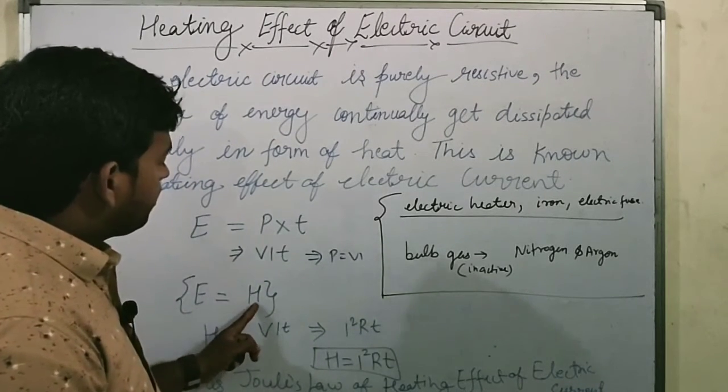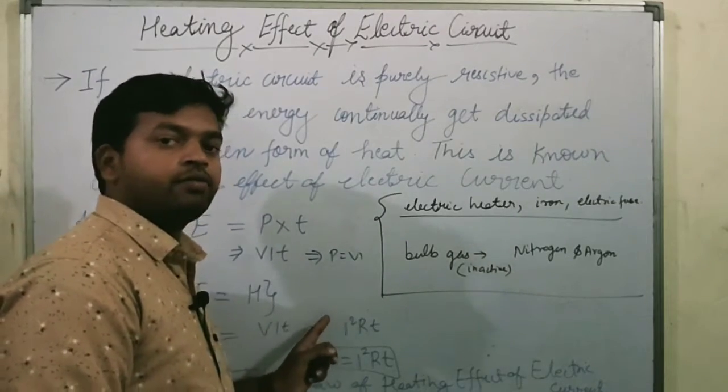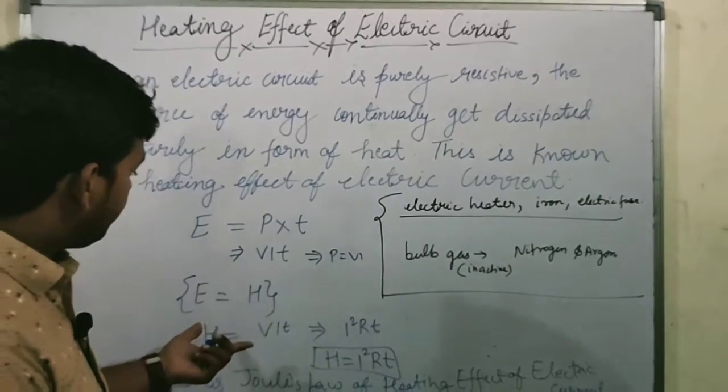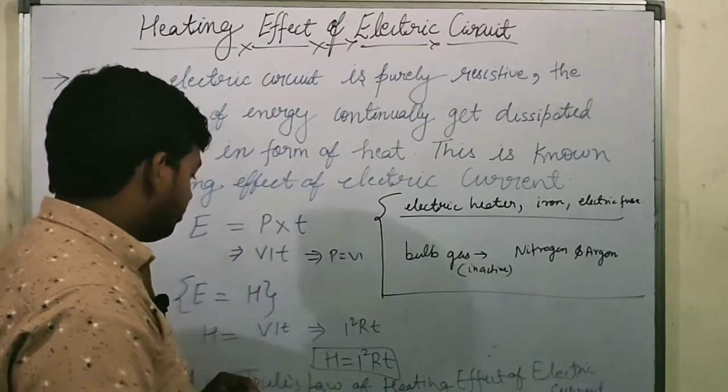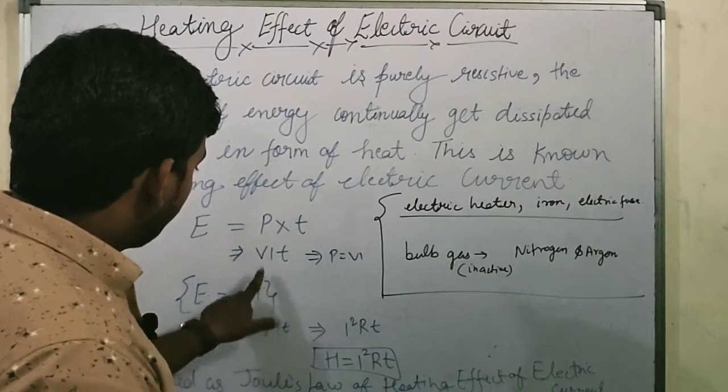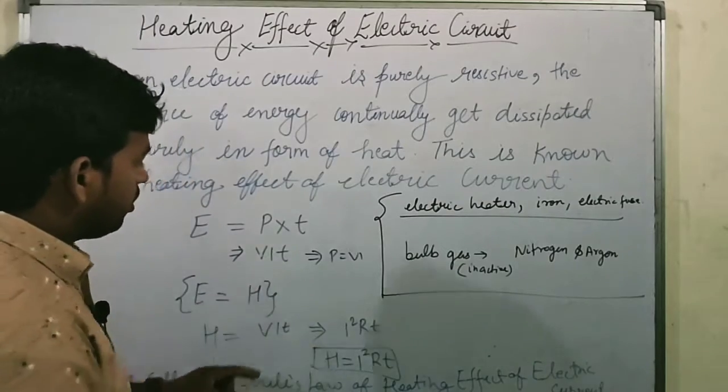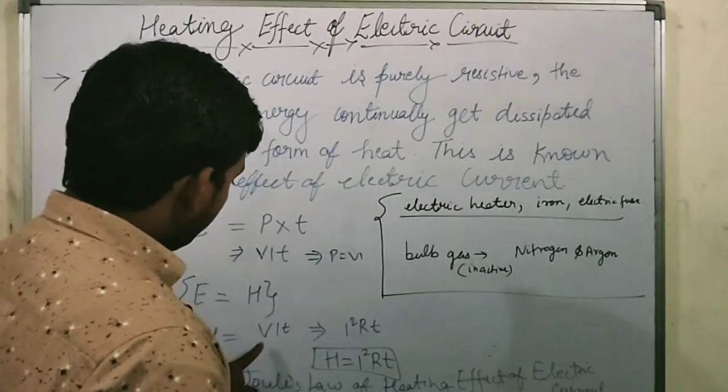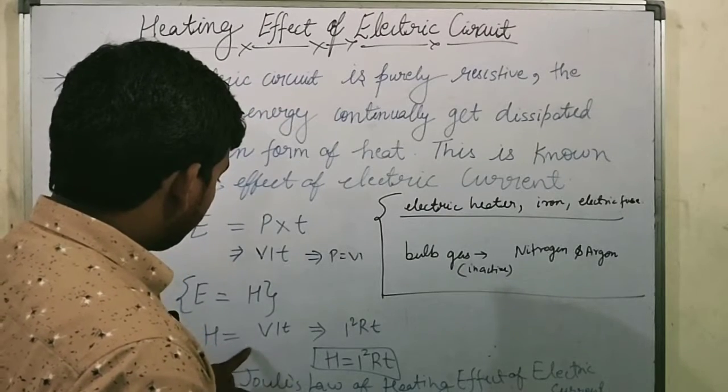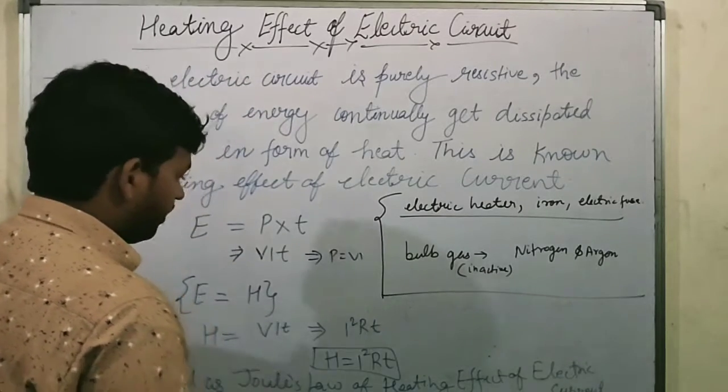Now, as we know that electric energy is equal to the heat produced in the system, we can write that E equal to H. So H equal to Vi T.